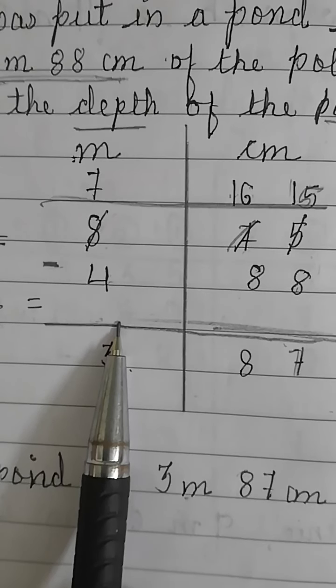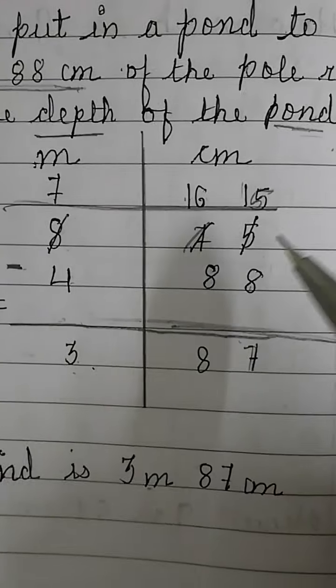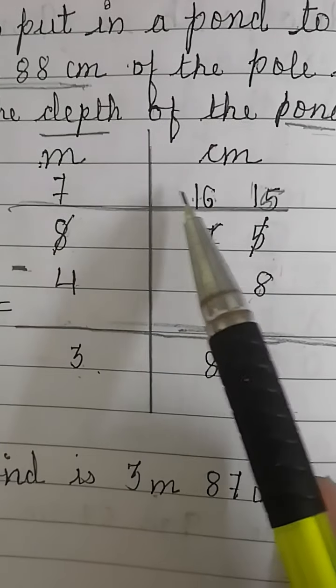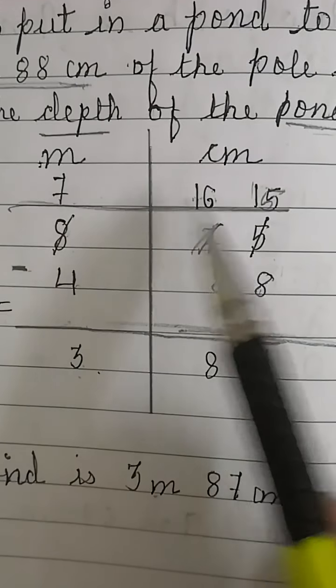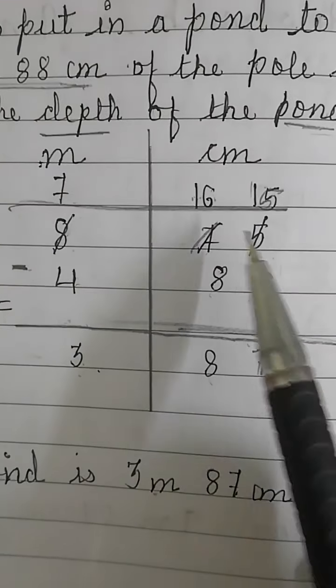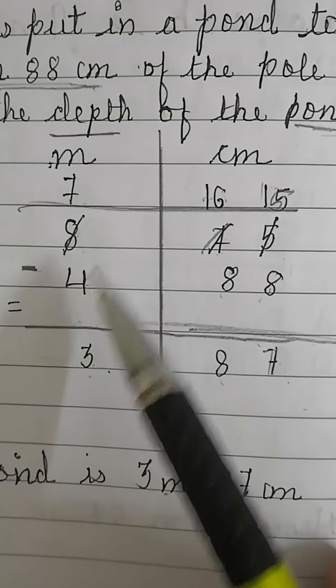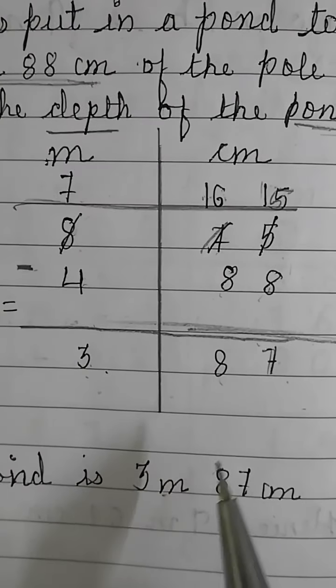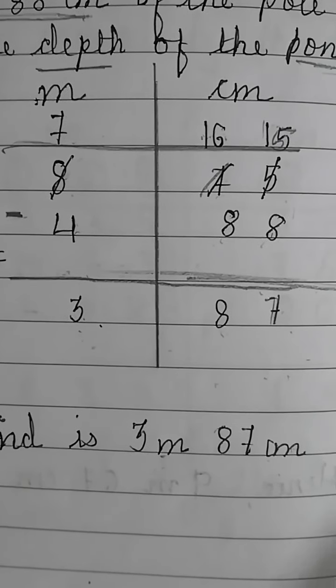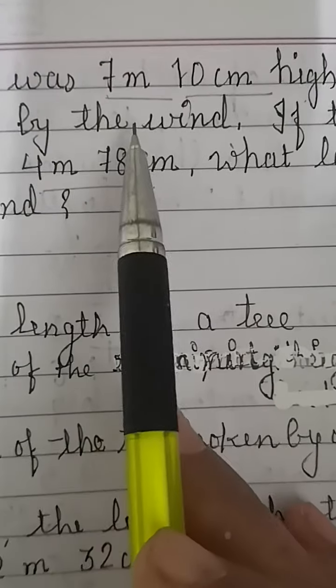After subtracting 4 meter 88 centimeter from 8 meter 75 centimeter we will get the depth of the pond. Subtracting centimeters: 5 minus 8 is not possible, so borrow 1 from next digit; 7 becomes 6. Then 6 minus 8 is not possible, so borrow 1 again; 6 becomes 16, and meters digit 8 becomes 7. Now: 15 minus 8 is 7, 16 minus 8 is 8, giving 87 centimeter. Then meters: 7 minus 4 is 3. The depth of the pond is 3 meter 87 centimeter.